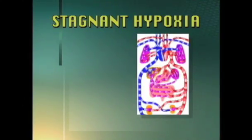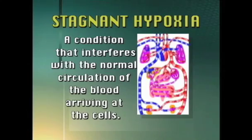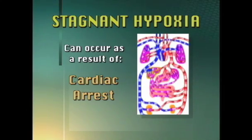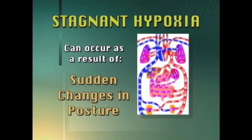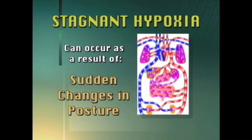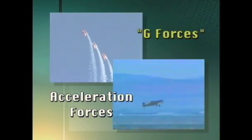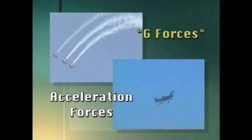Stagnant hypoxia occurs at the circulatory level. It is defined as a condition that interferes with the normal circulation of the blood arriving at the cells. Stagnant hypoxia can occur as a result of cardiac arrest, shock, exposure to cold, and sudden changes in posture, such as standing up after a prolonged rest. Aerobatic and agricultural flying expose pilots to acceleration forces, commonly called G-forces, that can result in this type of hypoxia at the brain level.